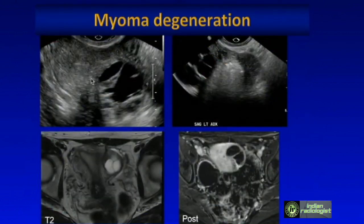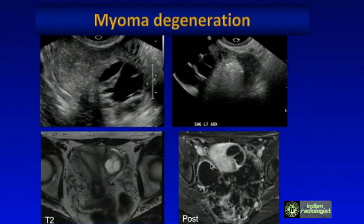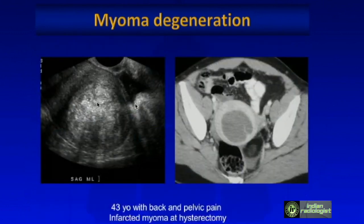Here are examples of cystic degeneration — a cystic lesion in the uterus, which is not a typical appearance for myoma. This patient also had a left ovarian dermoid. On MRI, you can see cystic degeneration with no enhancement in the cystic portion but enhancement in the rest of the fibroid. Having MRI to confirm the diagnosis is really helpful in these cases.